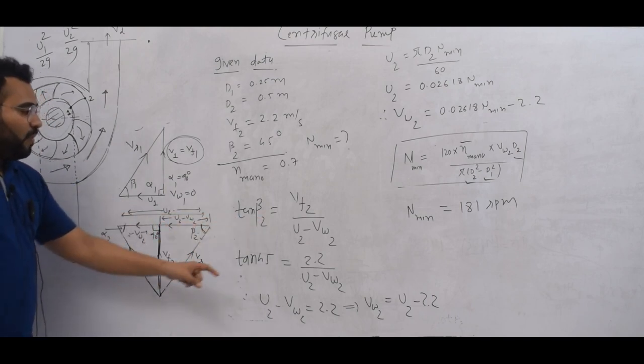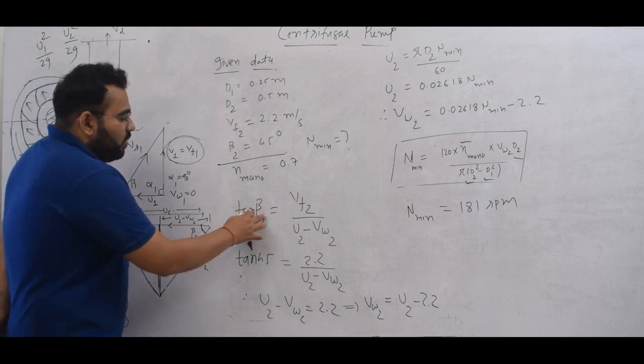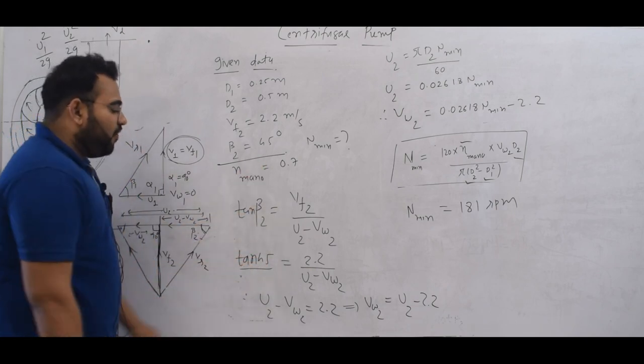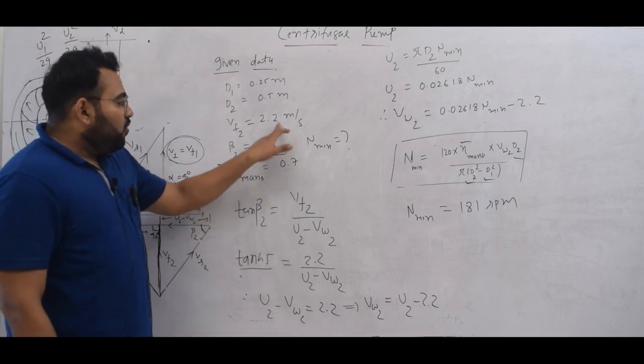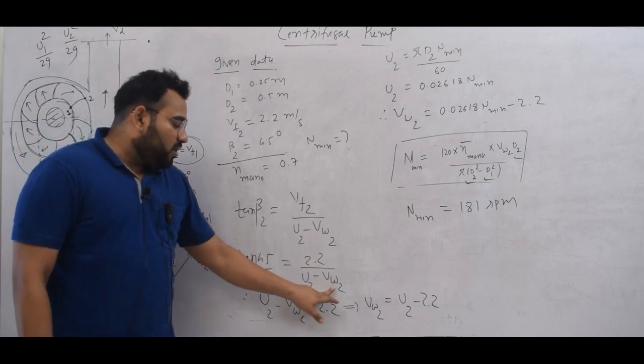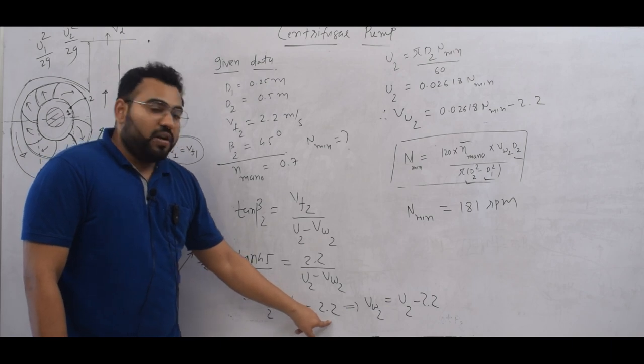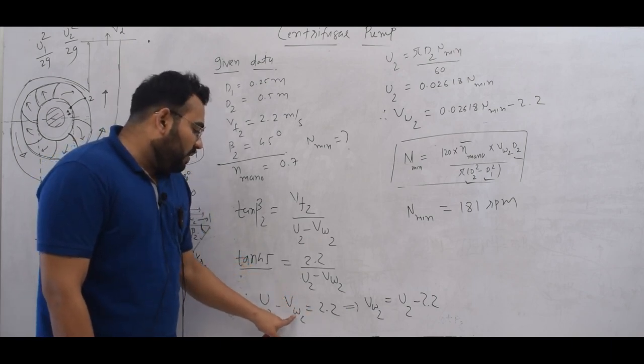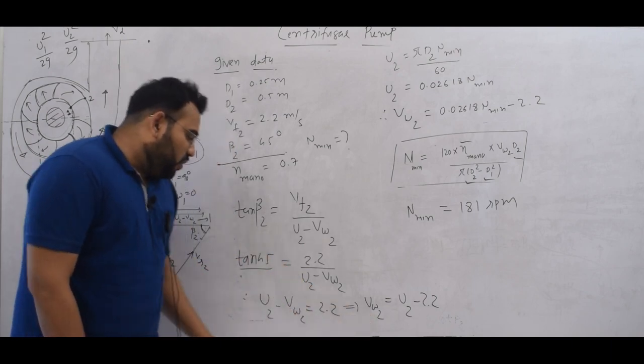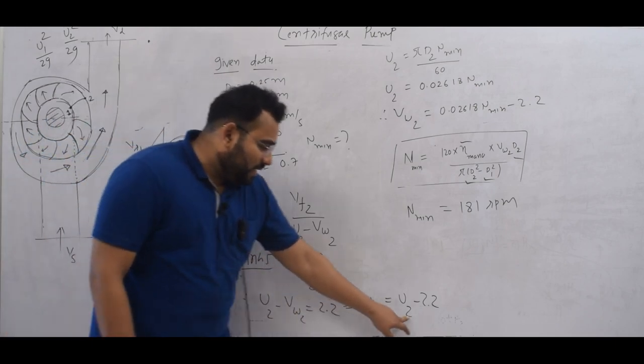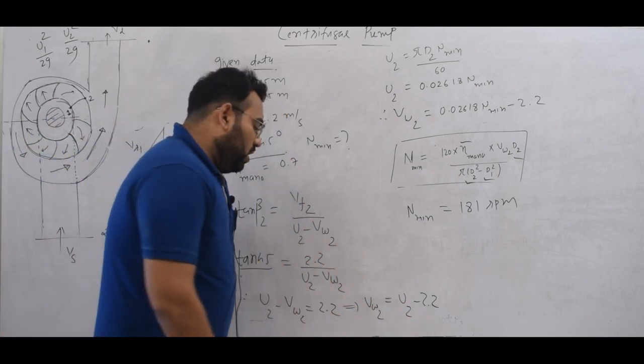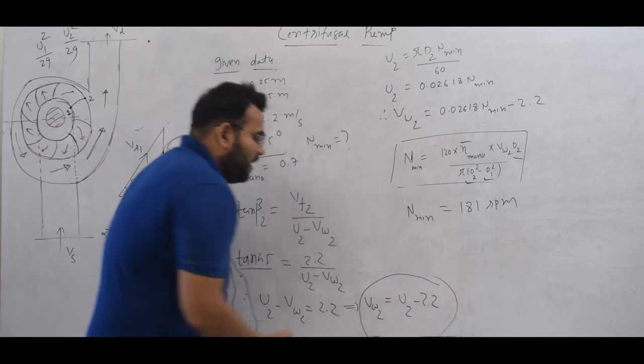VF2 upon U2 minus VW2. Now tan beta 2, beta 2 is 45 degrees, so U2 minus VW2 equals 2.2. So can I write VW2 equals U2 minus 2.2. In this way, we get an equation for VW2.